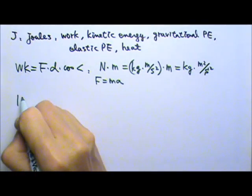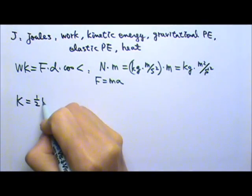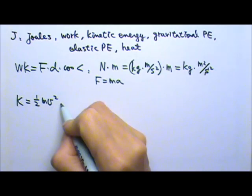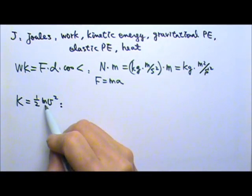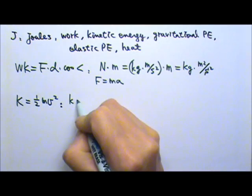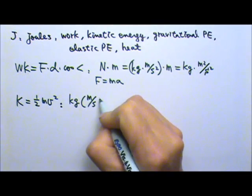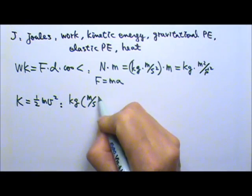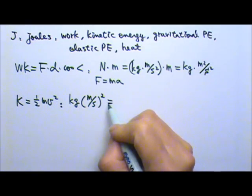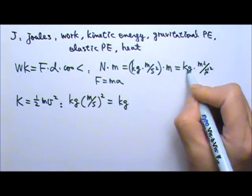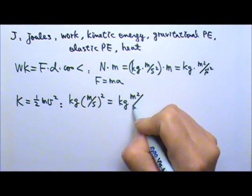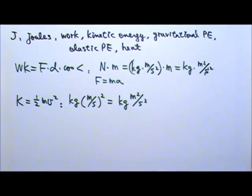So the kinetic energy is one-half mv squared. In terms of unit, one-half does not have a unit. The mass has a unit, kilograms. Speed has a unit, meters per second, and then we have to square it. So this gives us, yes, kilograms times meters squared divided by seconds squared. Same thing, joules.